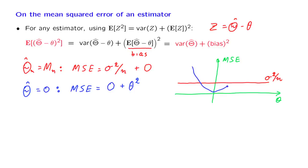On the other hand, for the 0 estimator, the mean squared error is equal to theta squared. How do they compare? Which one is better?